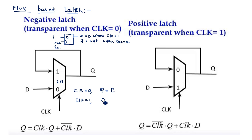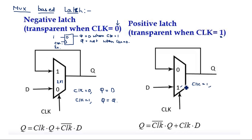When clock equals one, Q equals Q — the previous state. For the positive latch, it is transparent when clock equals one. When clock equals one, the multiplexer selects D so output Q equals D. When clock equals zero, the output is connected to the feedback, so Q holds its previous state.